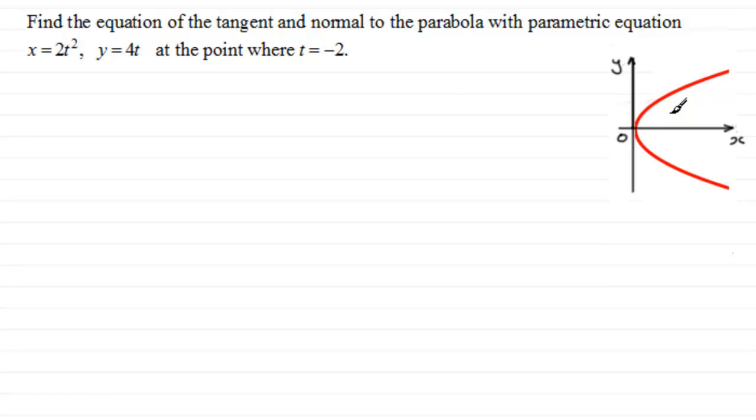So first of all, we need to find out whereabouts on this parabola the point is where t is minus 2. We need to establish the x and y coordinate. When t equals minus 2, we can substitute minus 2 into here to get x and y. Therefore, we have x equals 2 multiplied by minus 2 squared, and that clearly is equal to 8. And also for y, y would be equal to 4 times t, 4 times minus 2, so that's going to be minus 8.